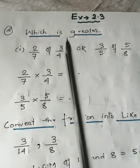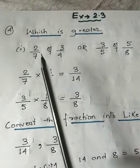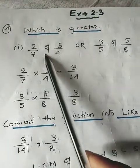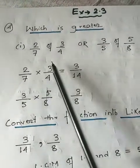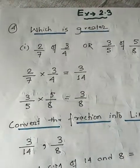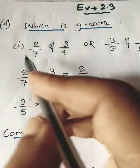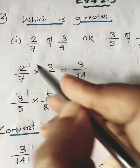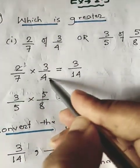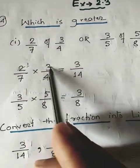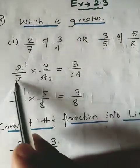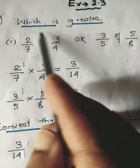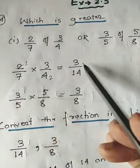The first thing you will do is multiply: 2/7 of means 2/7 into 3/4. You can reduce — 2 ones are 2, 2 twos are 4. So 3 ones are 3, 7 twos are 14. The product of these two fractions is 3 upon 14.